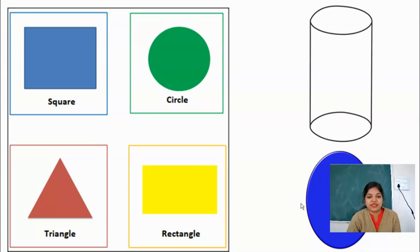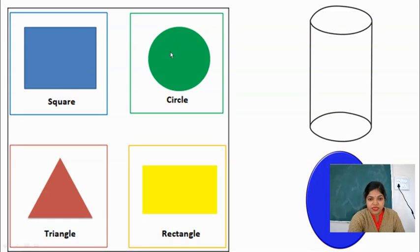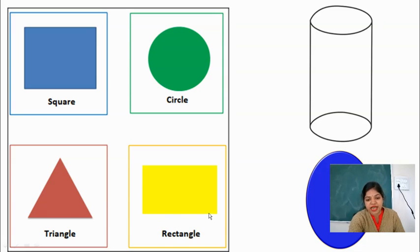Now you can see there are shapes on the screen. First is square — a 4 sided figure, all sides are equal. Circle — it has no corner, it is round in shape. And this is triangle — it has 3 sides. And this is rectangle — it has 4 sides and opposite sides are equal. And you can see this is a cylinder: 2 flat surfaces and 1 curved surface. And this is an oval — it looks like an egg.